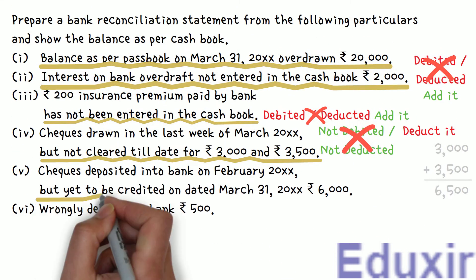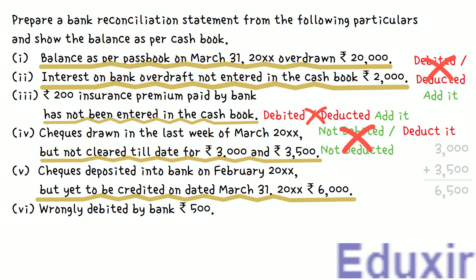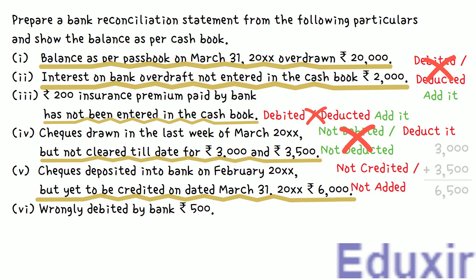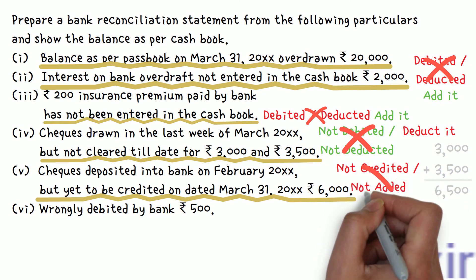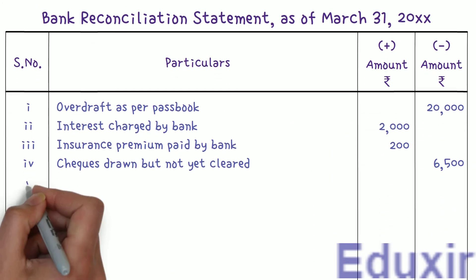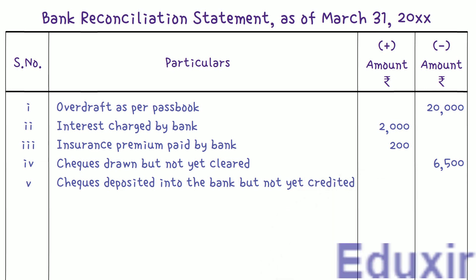Next, checks amounting to ₹6,000 were deposited in February 2017, but they are not yet credited. When the business receives these checks, they are debited in the cashbook and deposited in the bank. However, as these checks are not yet cleared, they will not be credited in the bank passbook. So we need to add this amount to the passbook balance to get the cashbook balance. We record 'Checks deposited into bank but not yet credited' and enter ₹6,000 in the plus amount column.